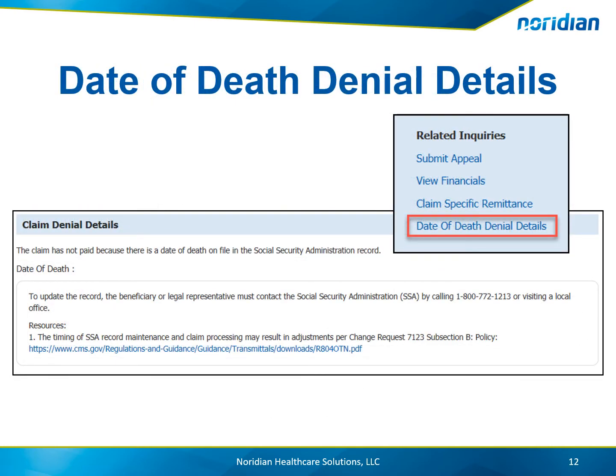For date of death claim denial details, the date of death on file in the Social Security Administration record and the CMS reference are provided. To update the record, the beneficiary or legal representative must contact the Social Security Administration.